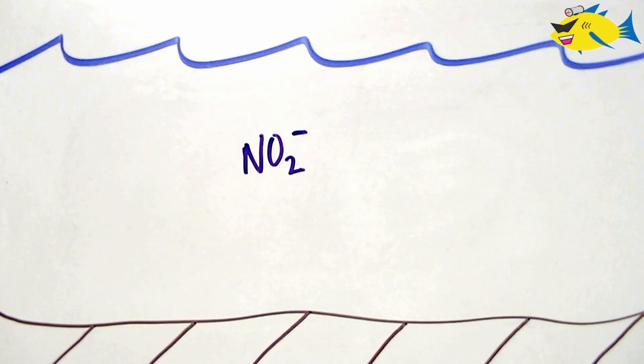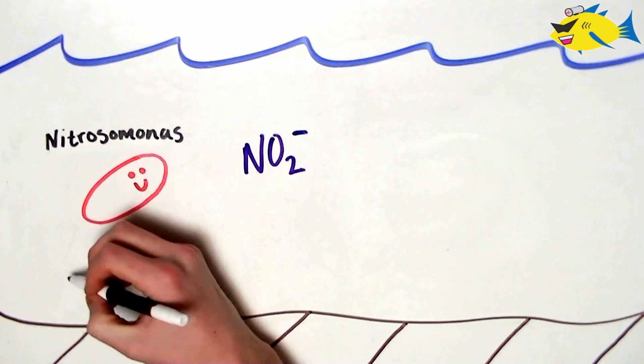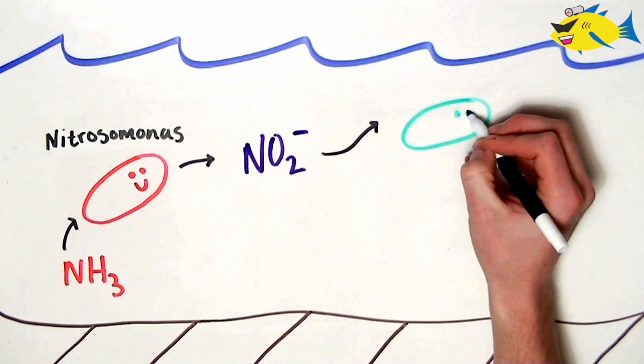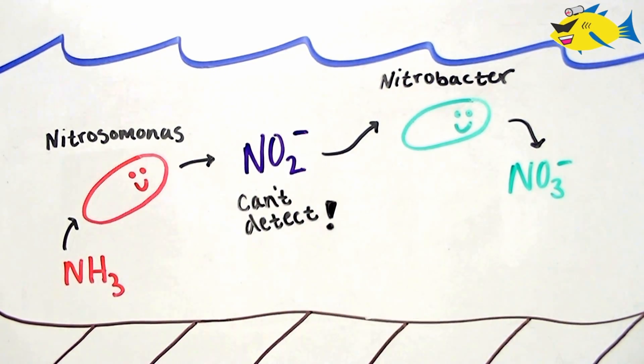We'll start by briefly discussing nitrite NO2-. Nitrite is almost exclusively generated by the oxidation of ammonia by nitrifying bacteria in the genus Nitrosomonas. As long as we have a stable community of beneficial bacteria, we shouldn't be able to detect this compound in our aquarium.